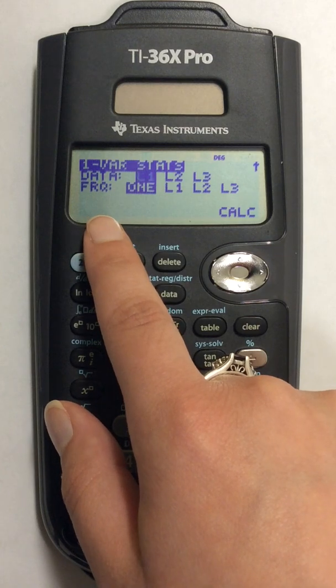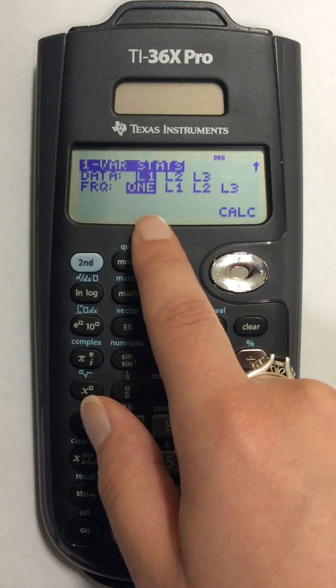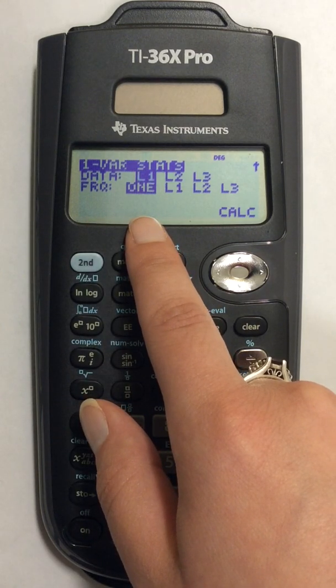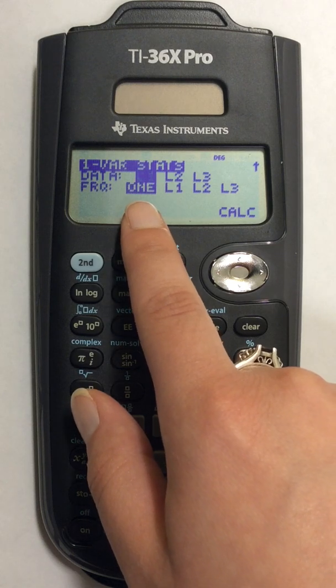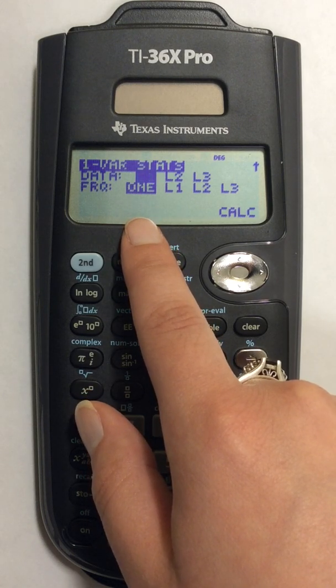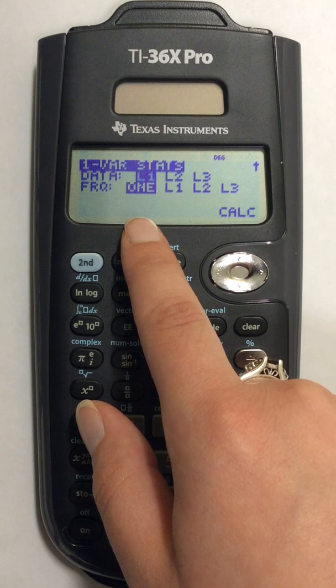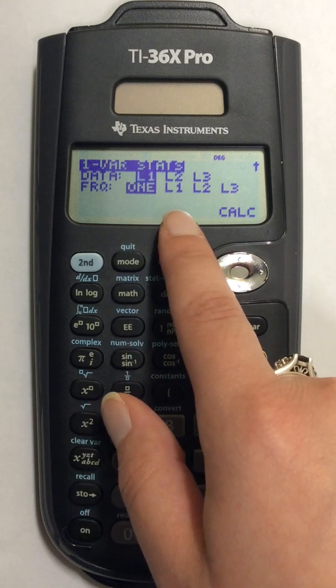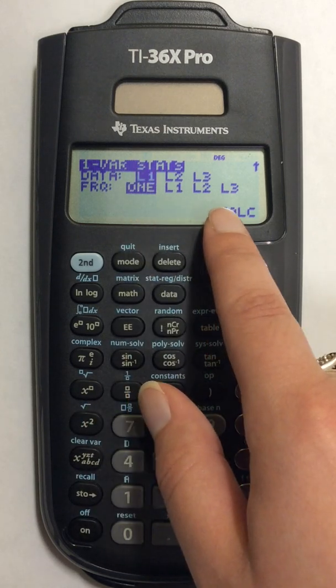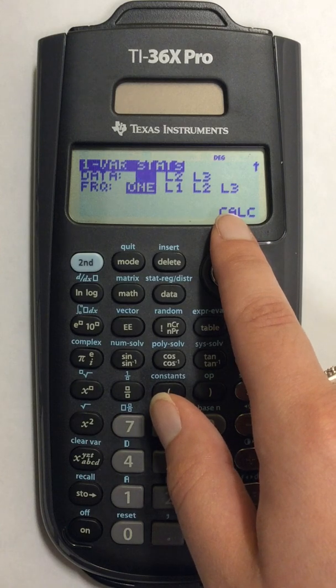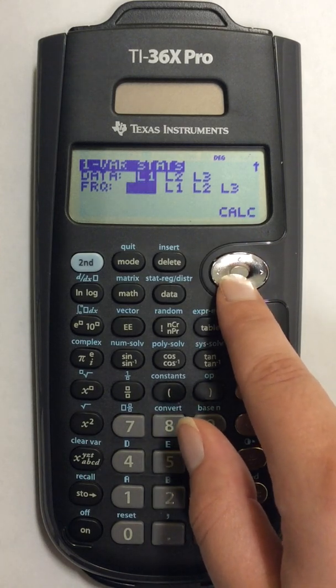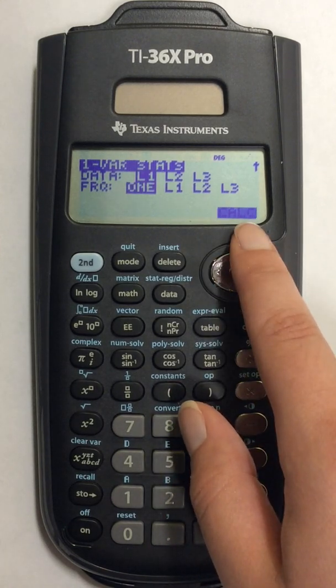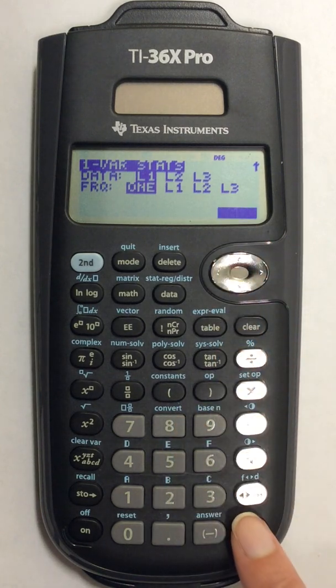For frequency lists I only have one list of data so I'm going to leave one highlighted. If you are using a frequency list just make sure one of the other lists are highlighted. Come down to CALC and press ENTER.